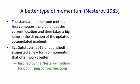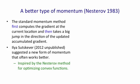Ilya Sutskever has found that it works better in many cases to use a form of momentum suggested by Nesterov, who was trying to optimize convex functions, where we first make a big jump in the direction of the previous accumulated gradient, and then we measure the gradient where we end up and make a correction.